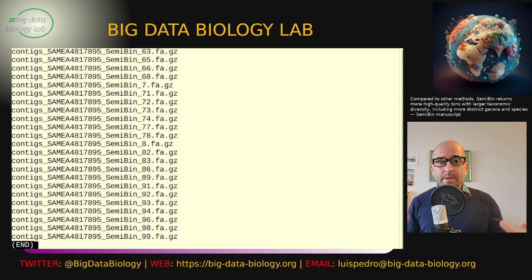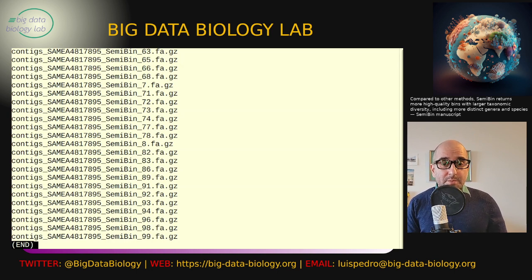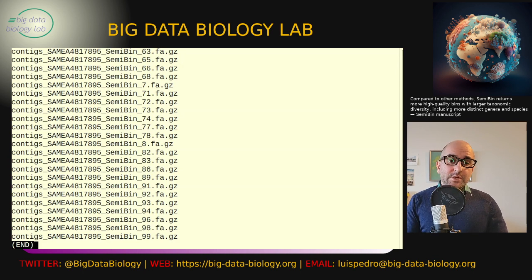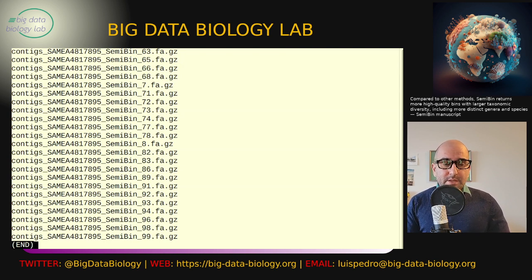That's how you use SemiBin for multi-sample binning. There is a trade-off: it does take longer, but it can potentially give you much better bins. Even though we're using all of the samples together, the bins are still sample-specific — we're just using the abundance across samples to get better bins. If you have any questions, there's a SemiBin mailing list, as well as email and Discord. Join us there, please subscribe to the channel, and I hope to see you very soon.